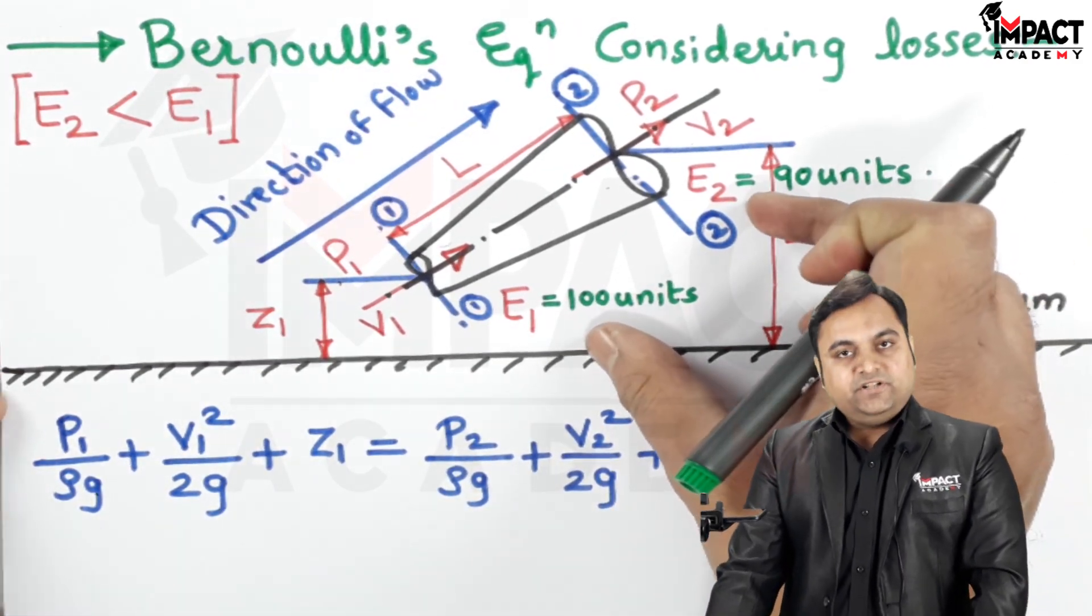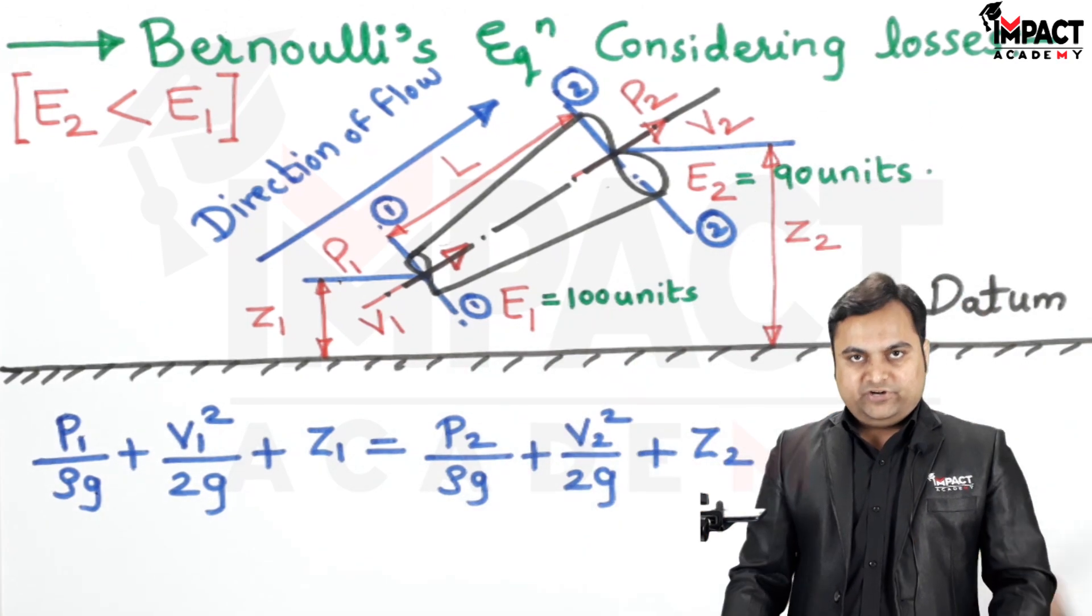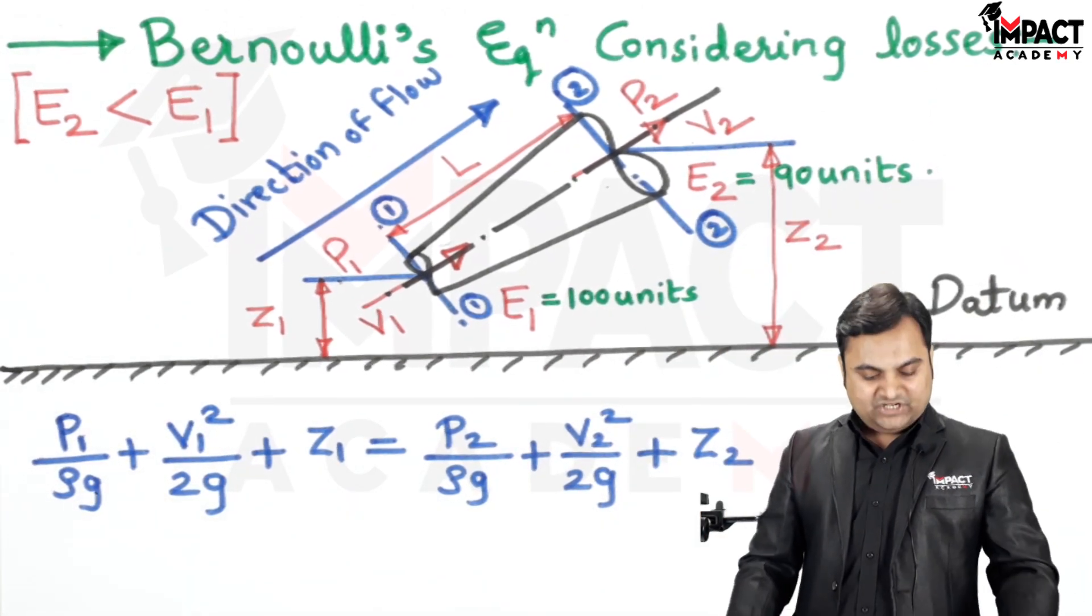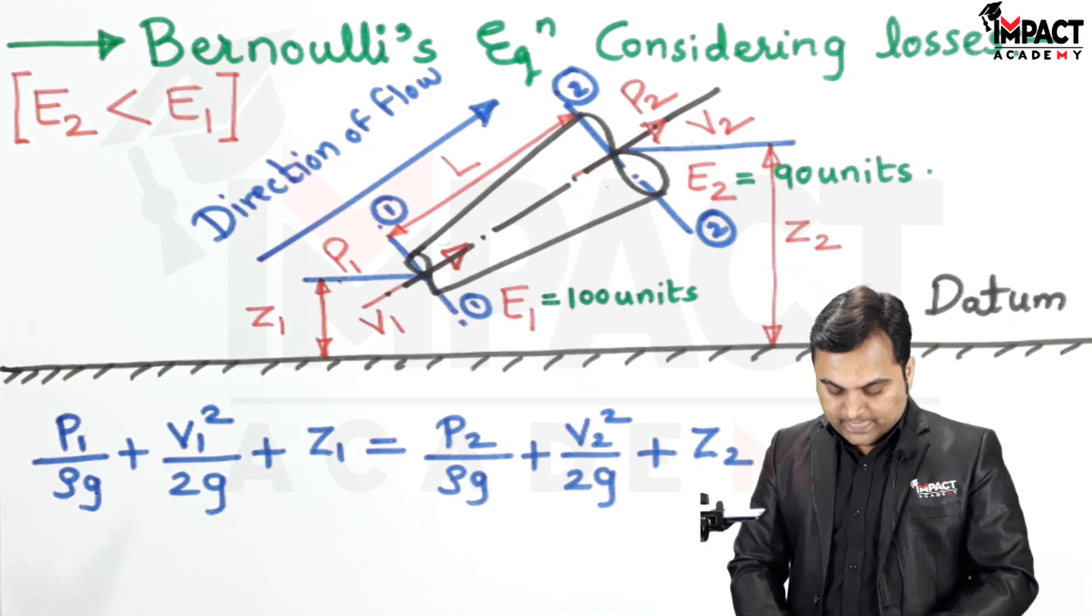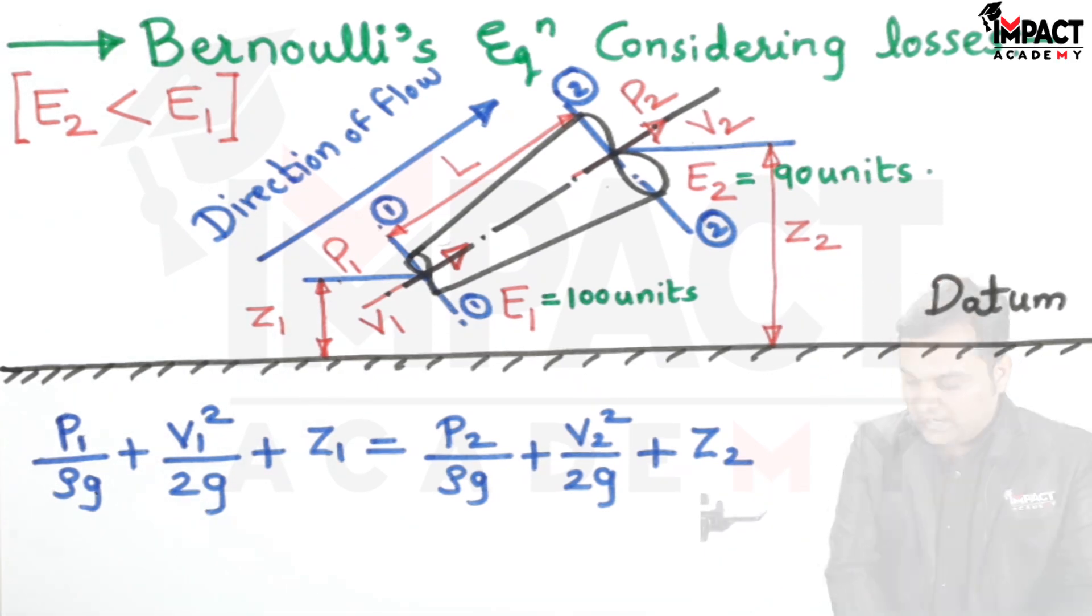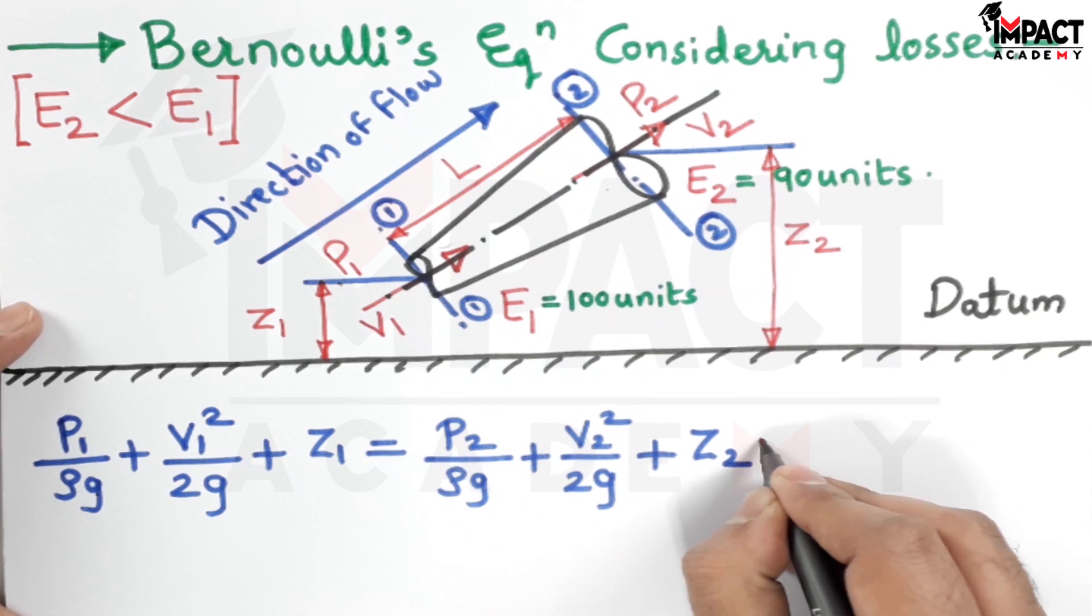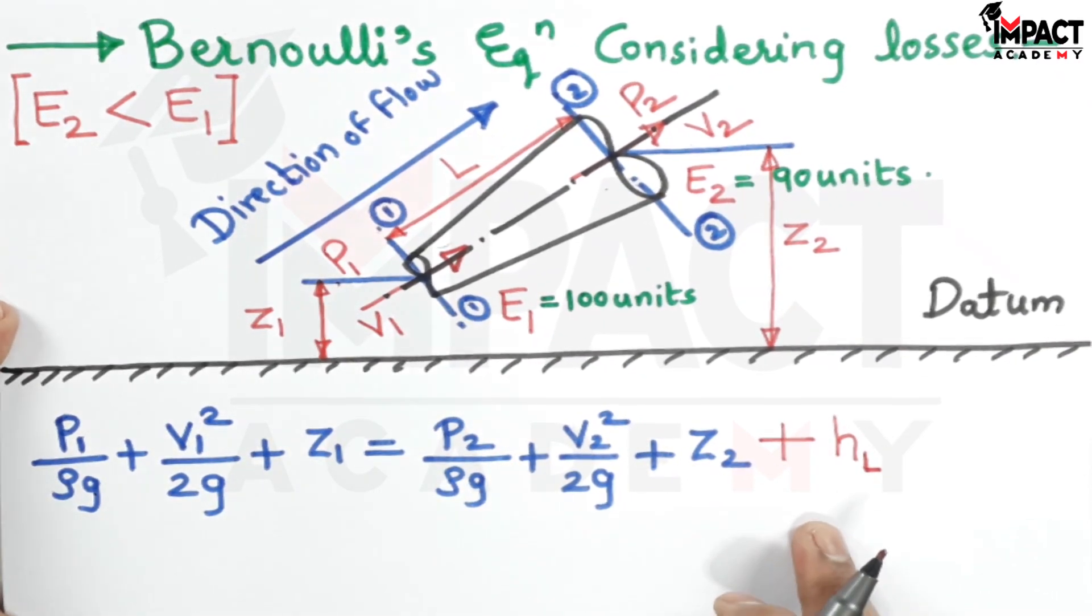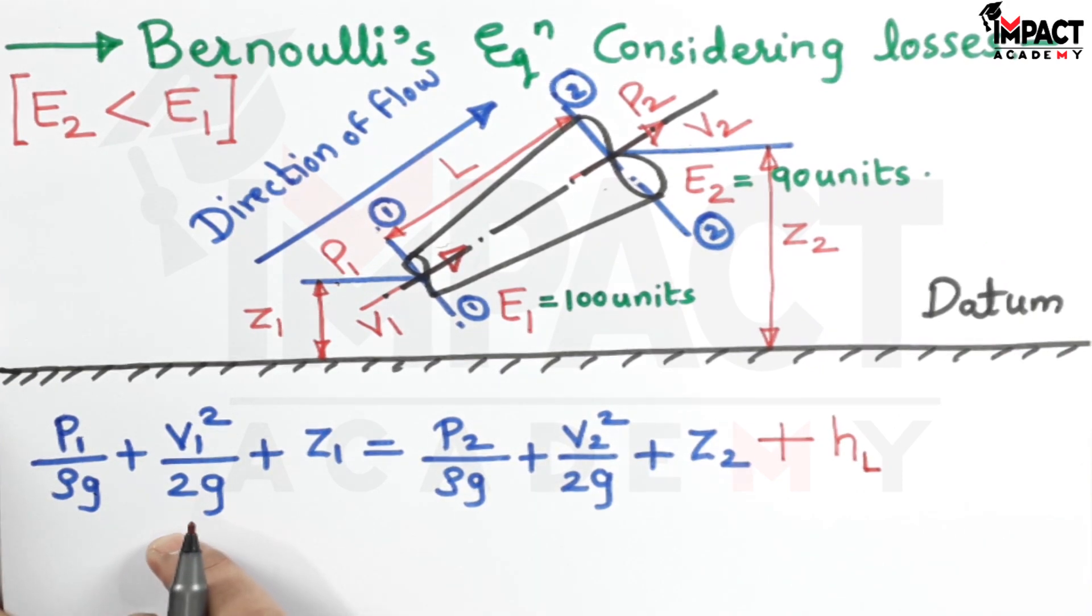It means their difference is the head loss due to friction, which comes out to be 10 units. That is called as HL or the head loss, and that we need to add in E2. HL would be added to E2 in order to make it equal to E1.